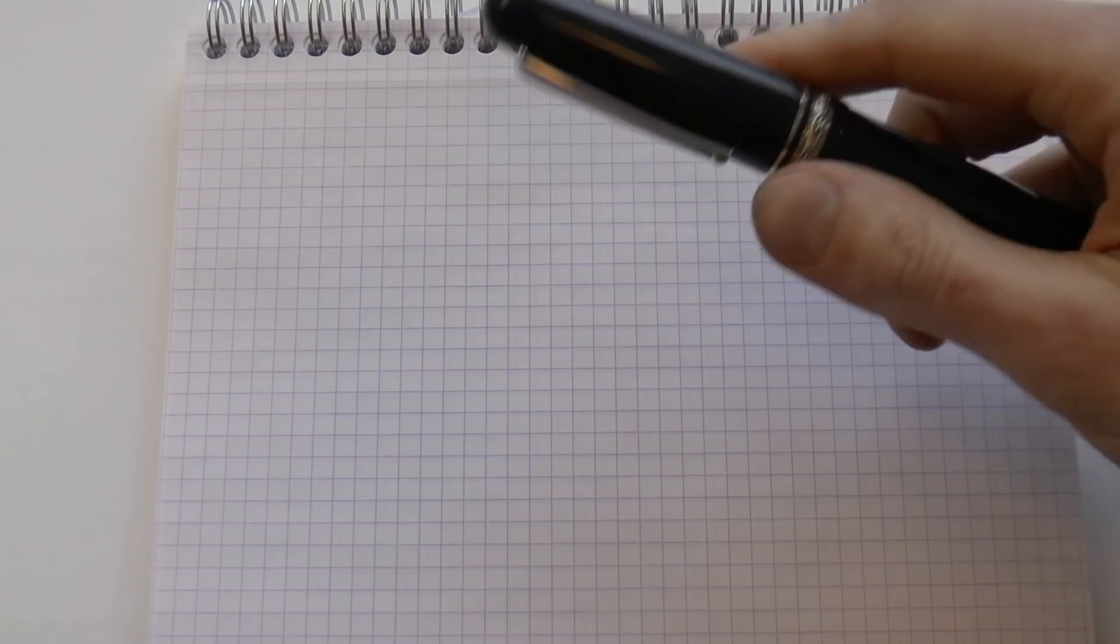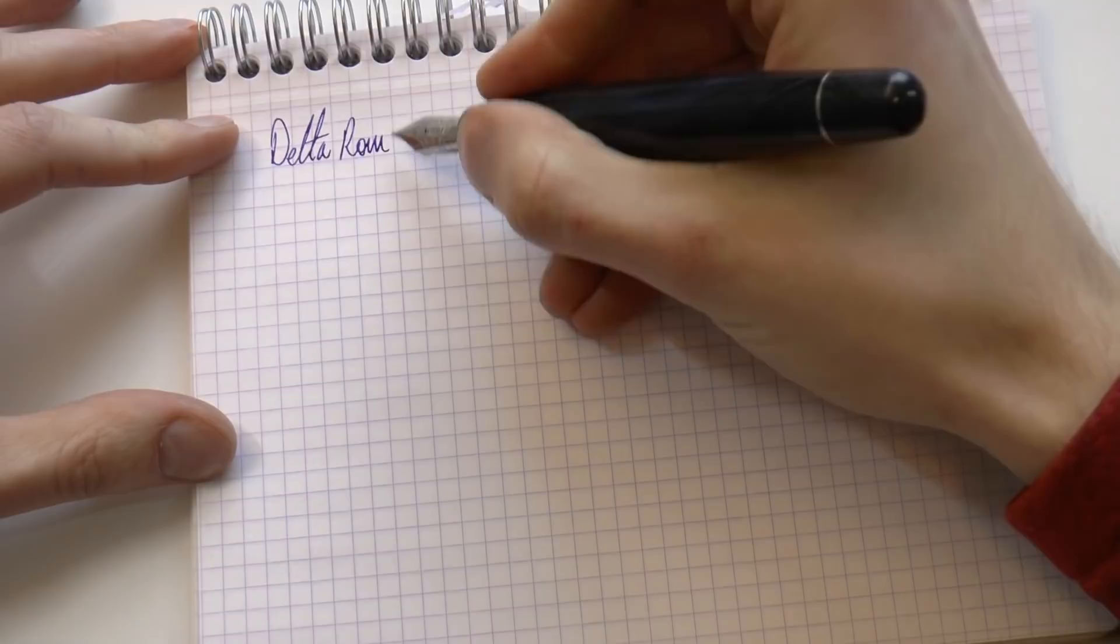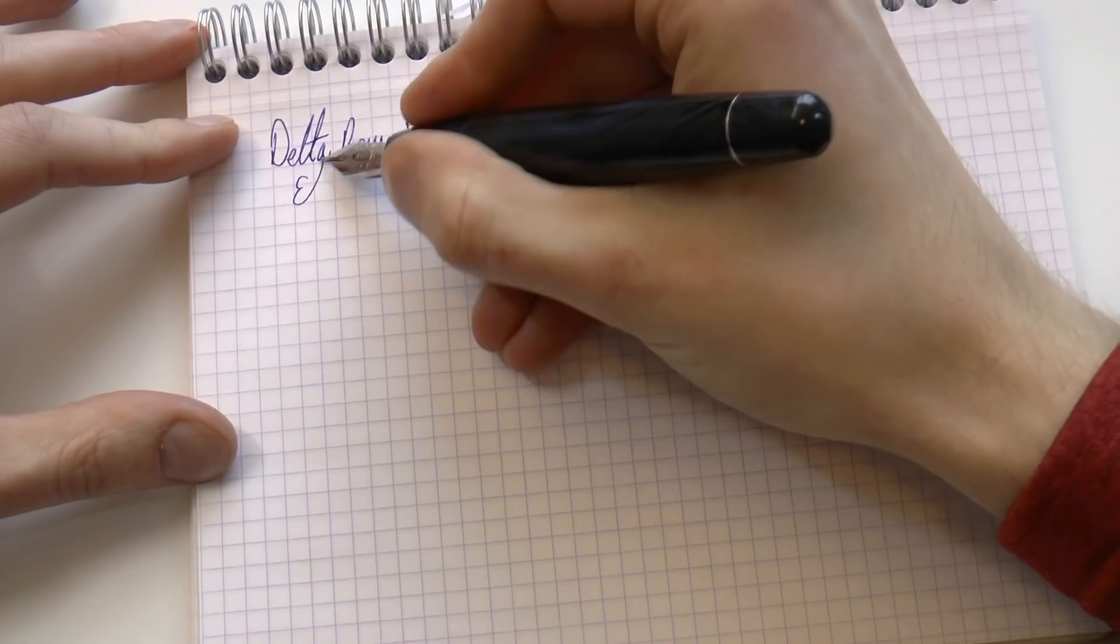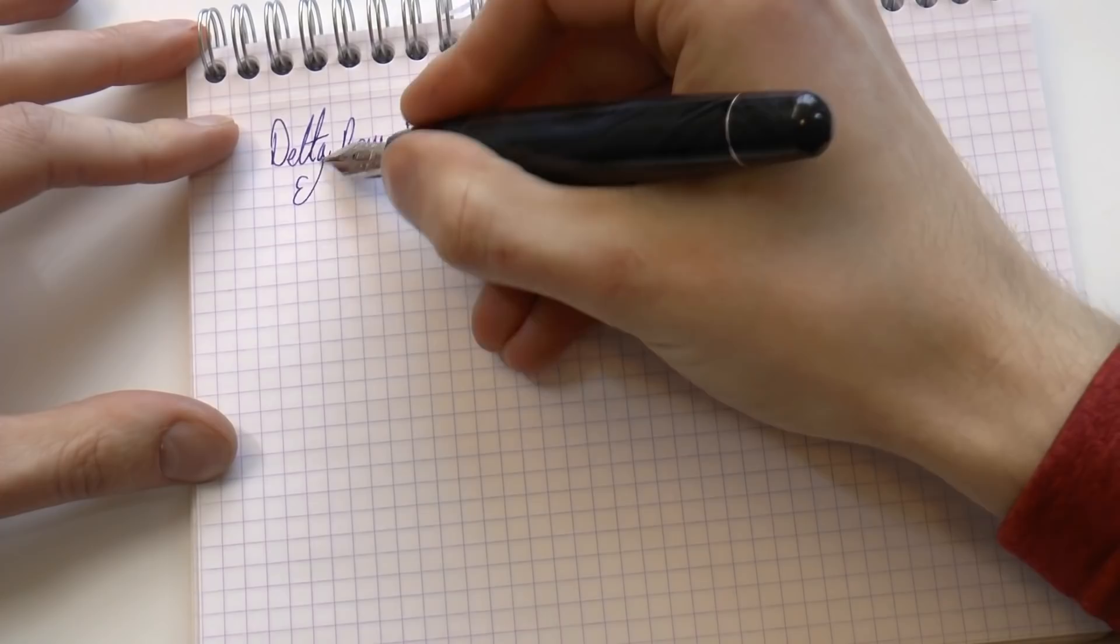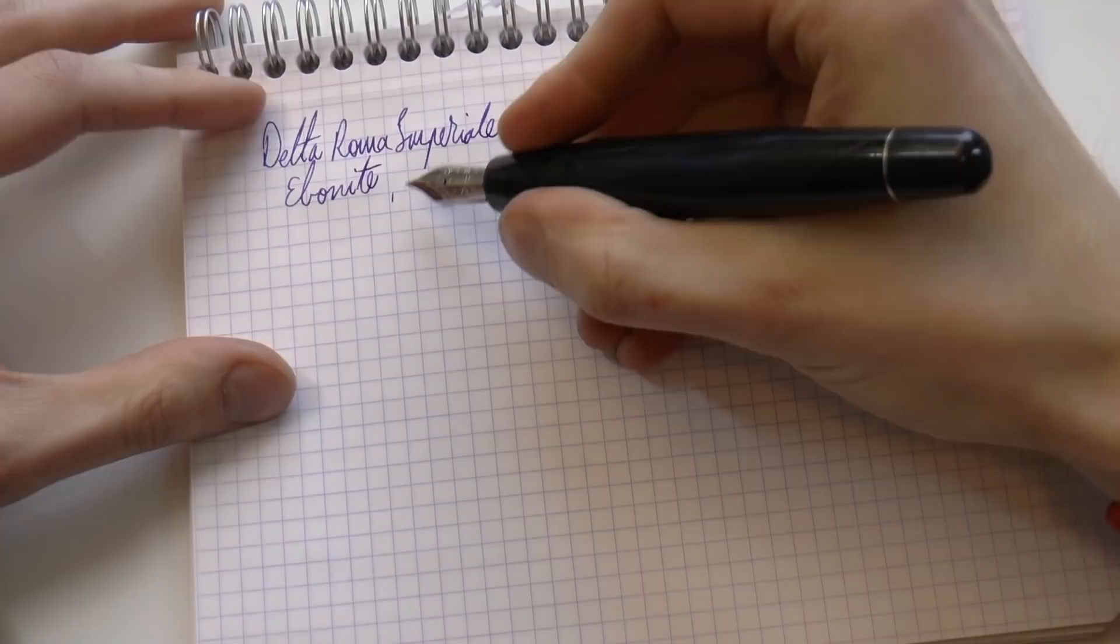So maybe let's just see these pens side by side. I'll start with Jack's. So here we have the Delta Roma Imperiale. This is ebonite. And I am almost certain, I actually wanted to check that and then I forgot. But yeah, it's a fine. That's what I thought. It is a 14k fine nib.